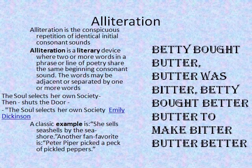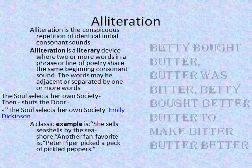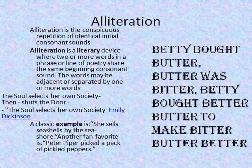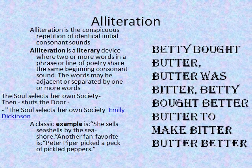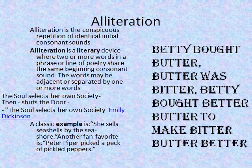Next is alliteration — one of the most popular figures of speech used in poetry. Alliteration is a conspicuous repetition of identical initial consonant sounds, where two or more words in a phrase or line of poetry share the same beginning consonant sound. The words may be adjacent or separated. For example: 'The soul selects her own society then shuts the door' by Emily Dickinson, with repeated S sounds. Classic examples include 'She sells seashells by the seashore' and 'Peter Piper picked a peck of pickled peppers' — these are tongue twisters as well.